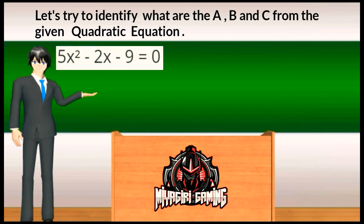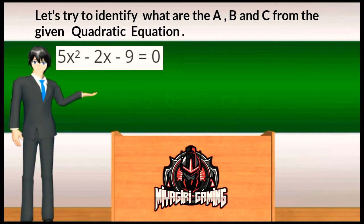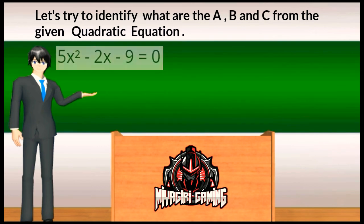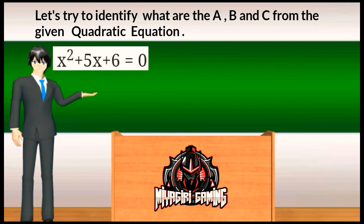Next, for 5x squared minus 2x minus 9 equals 0, the value of a is 5, b is negative 2, and c is negative 9. Next, for x squared plus 5x plus 6 equals 0, the value of a is 1, b is 5, and c is 6.